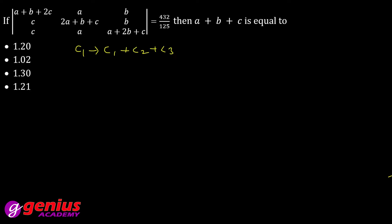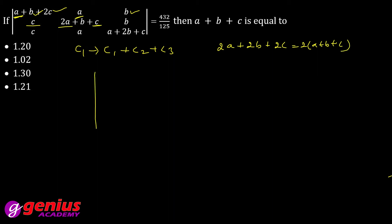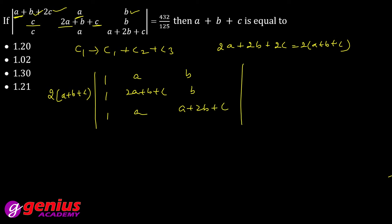2 common lete hain first column se, toh a + b + c aa jaata hai har row mein. Uski jagah 1, 1, 1 likh lete hain. Determinant simplify hone ke baad: R2 − R1 aur R3 − R1 operations lagate hain taaki zeros laayein. Diagonal mein aata hai: first column mein a+b+c terms hain, baki rows mein −(a+b+c) aur zero entries banti hain.